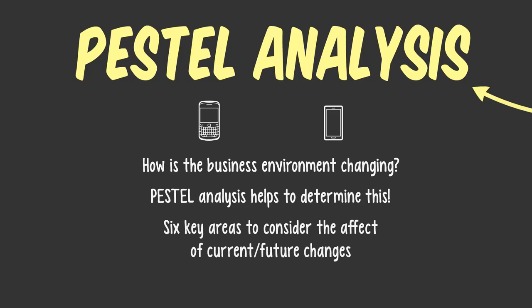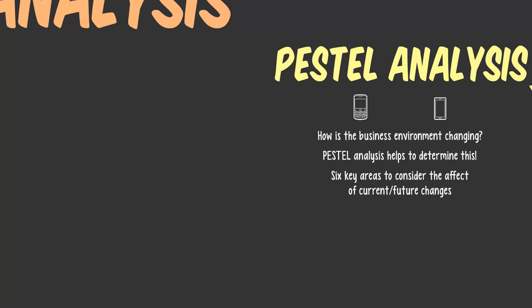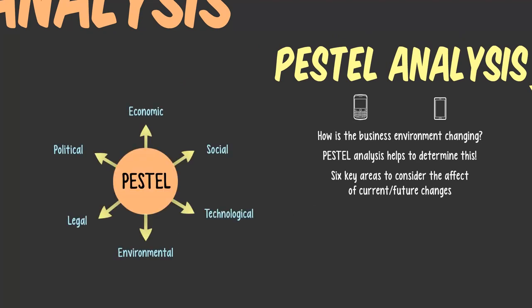PESTEL covers the six key areas that businesses and organizations need to consider so they can remain aware of the current environment as well as take note of any future changes. These six key areas are: political, economic, social, technological, environmental, and legal. These are broad macro factors — not like micro environments, not related to a specific industry or company. Think of them more as national or international factors. Let's focus on each factor individually.